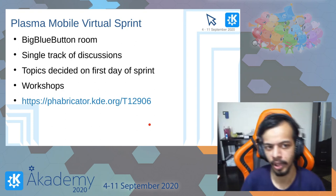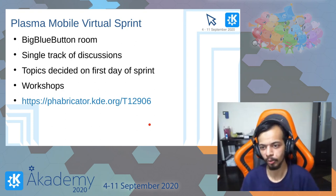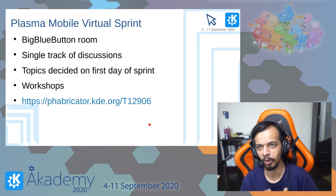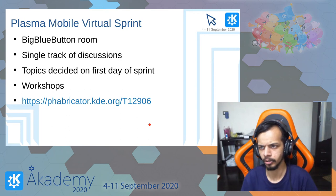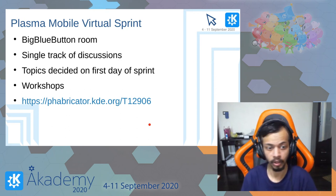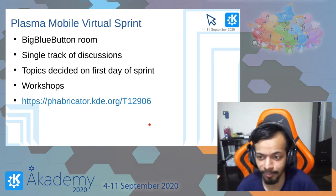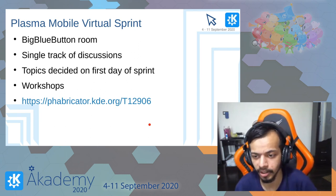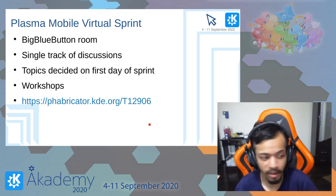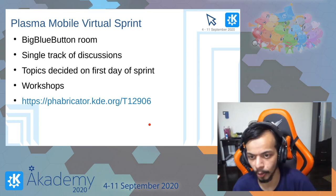Another sprint we decided at short notice was the Plasma Mobile virtual sprint, organized during the first full lockdown. We hosted it on a streaming platform — thanks to KDE for that. It had a single track of discussion; we decided topics on the first day and also hosted online workshops during that sprint.